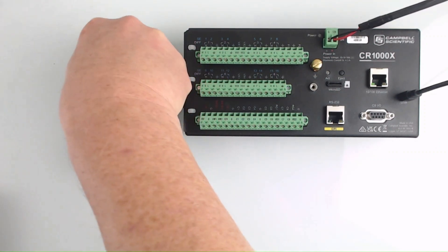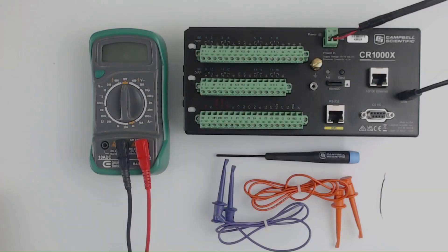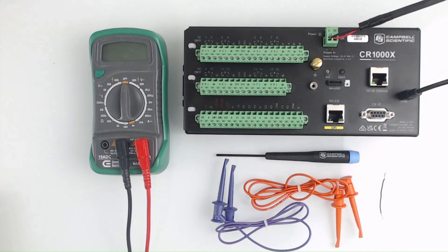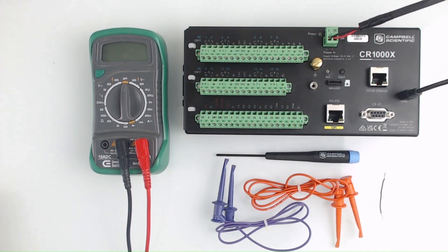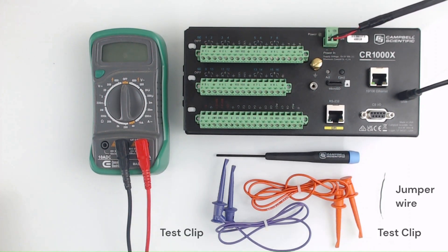In this test, I'm going to measure the current drain of my CR 1000 X system. In order to put the multimeter in series with the current flow, I will use two test clips and a short jumper wire. I also have a flat-bladed screwdriver with a two and a half millimeter blade.